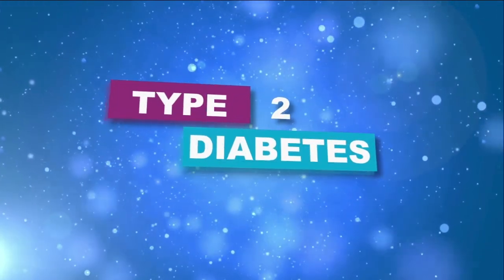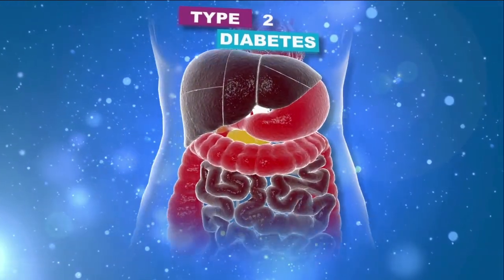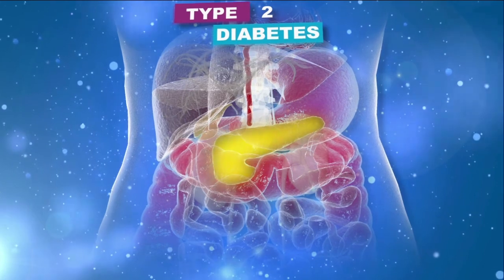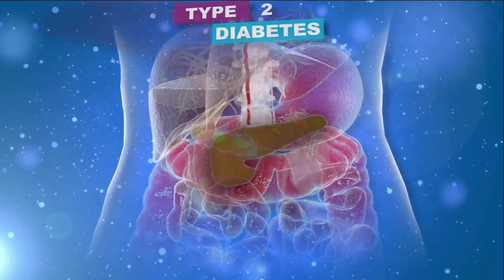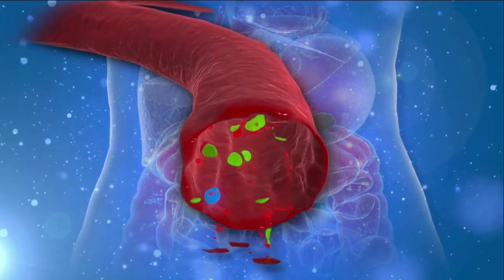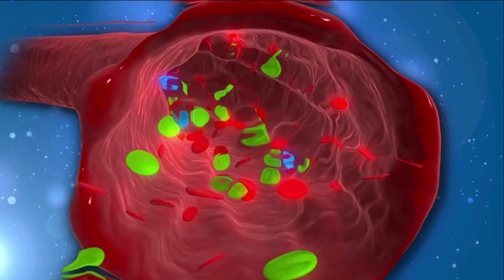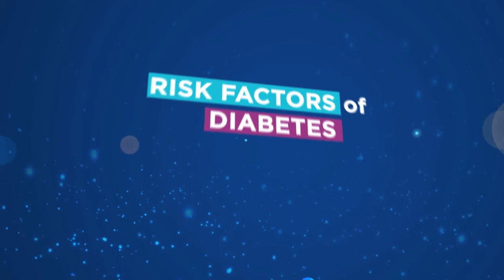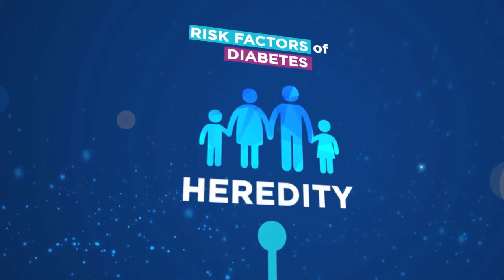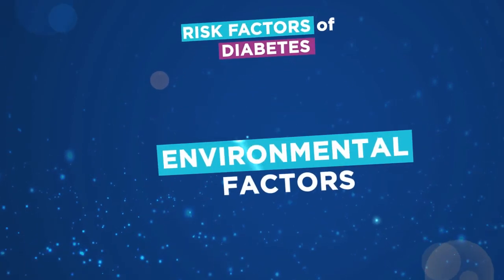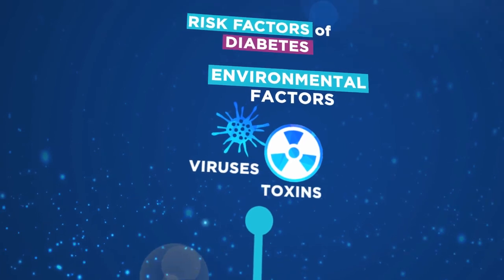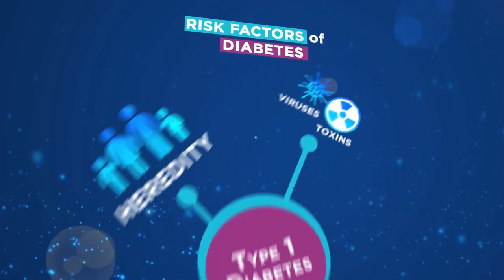Type 2 diabetes occurs when our body cannot use insulin properly or does not make enough insulin, which results in sugar building up in the blood instead of being used as energy. While heredity and environmental factors such as viruses and toxins account for type 1 diabetes,